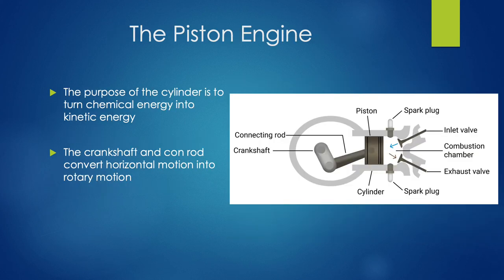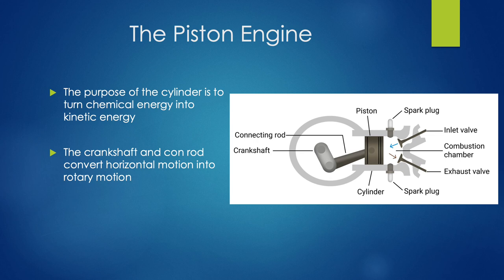Now we're going to look at the piston engine in a bit more detail, as you need to know it for the CAA exam — how it works and all the elements to it. The main purpose of the cylinder piston engine is to convert chemical energy — so petrol or fuel — into kinetic energy that we can use. The crankshaft, which is the central point of the engine, and the connecting rod, which connects the cylinder and the piston, convert horizontal motion into a rotary motion to turn a propeller or some kind of drive shaft.